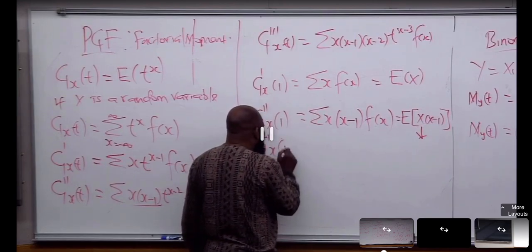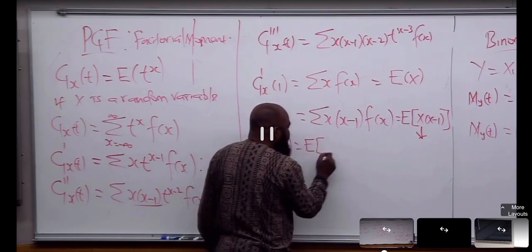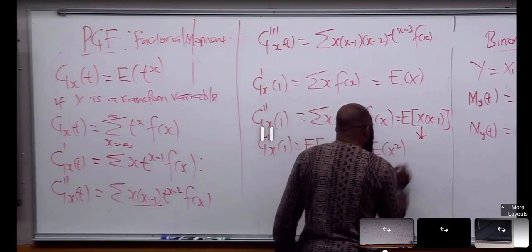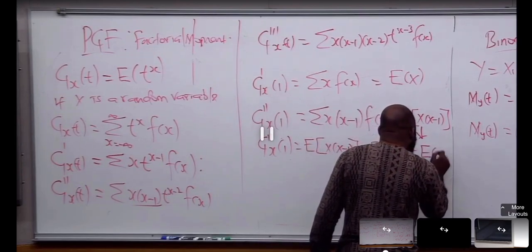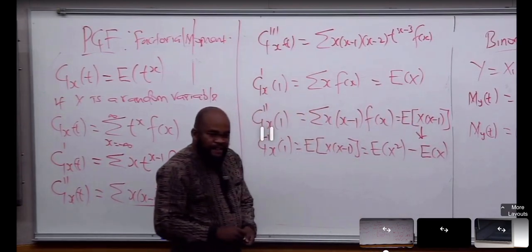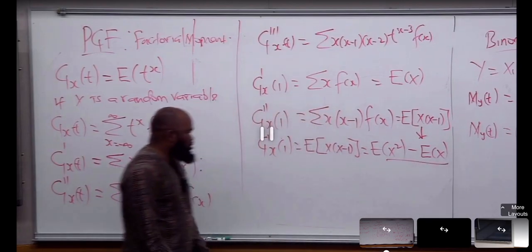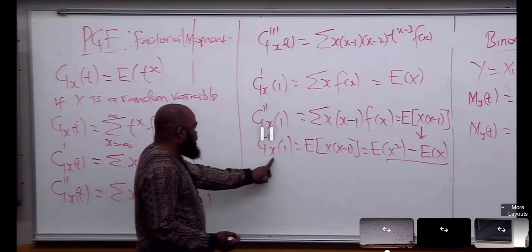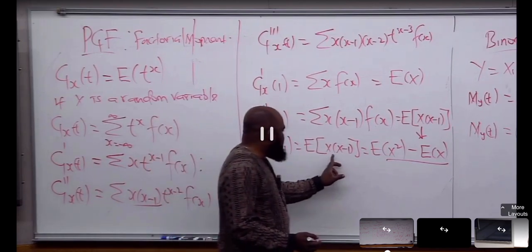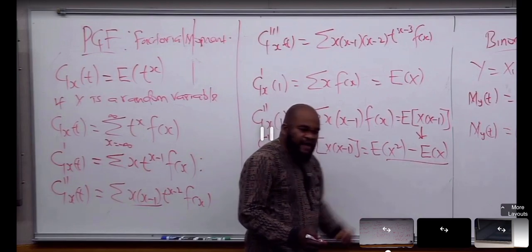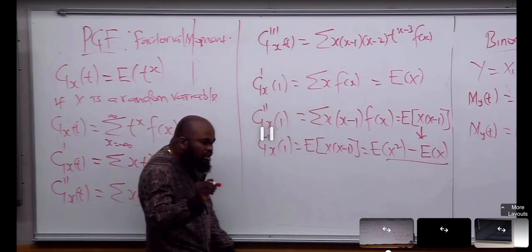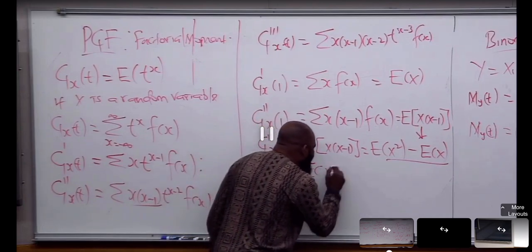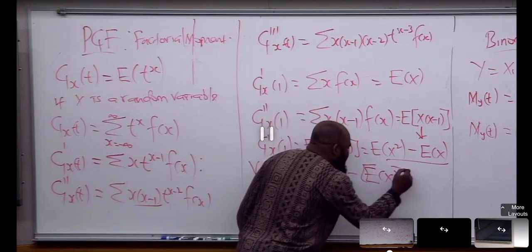G double-prime of 1, which is the second factorial moment, is the same as E[X squared] minus E[X]. The variance of X is the expectation of X squared minus the square of E[X].